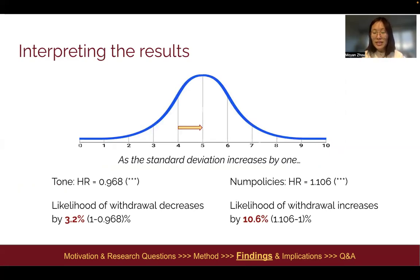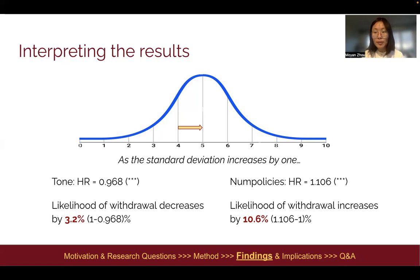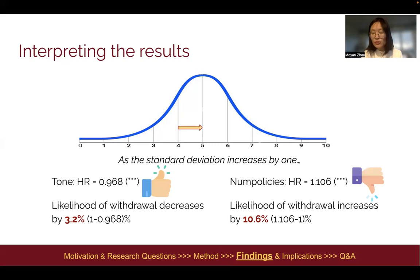As the standard deviation increased by one in tone, the likelihood of withdrawal decreased by 3.2%. In contrast, as the standard deviation increased by one in number of policies, the likelihood of withdrawal increased by 10.6%. This means we want tone to be higher, and we don't want number of policy links because it hurts retention.